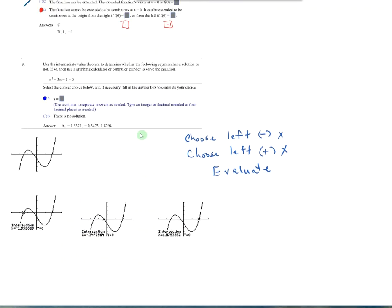Number 8 says use the intermediate value theorem to determine if the following equation has a solution or not. If so, using a graphing calculator or computer grapher to solve the equation. We're going to pick a value left and a value coming from the right. If you chose like negative 1 and positive 1, you're to the left of 0 and you're to the right of 0. And you plugged them into your function. If you plug in negative 1 here, you should get a positive 1. If you plug in a positive 1, you get negative 3. The goal is to see is there a sign change. And there was from negative 1 to 1, there was a sign change. It went from positive to negative.